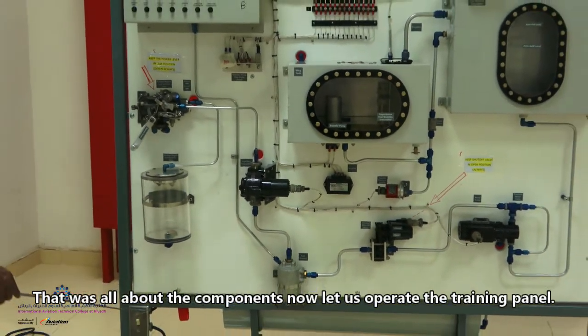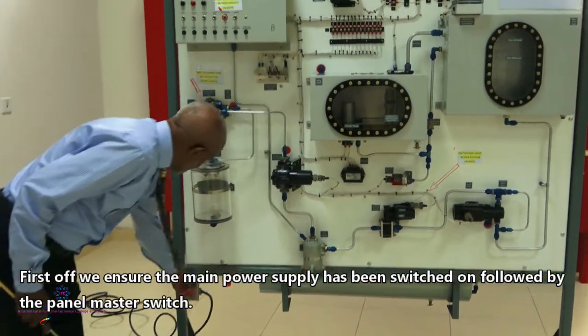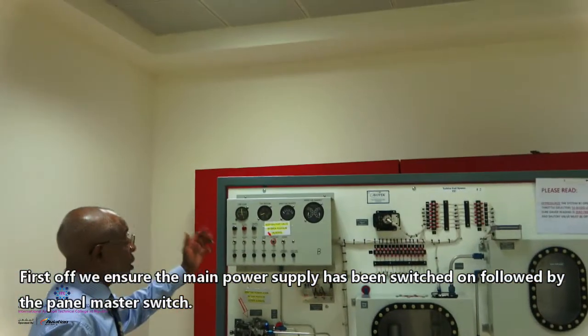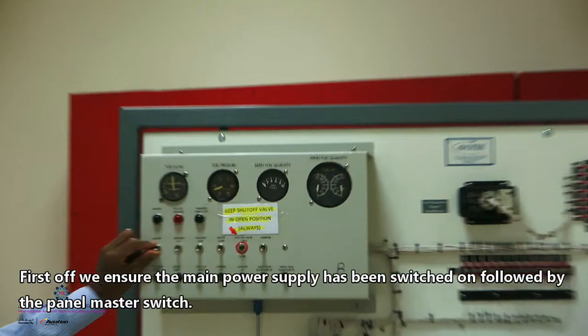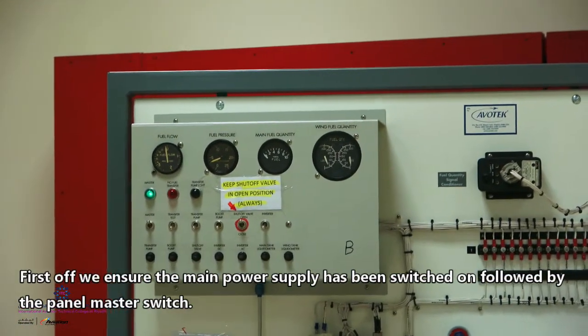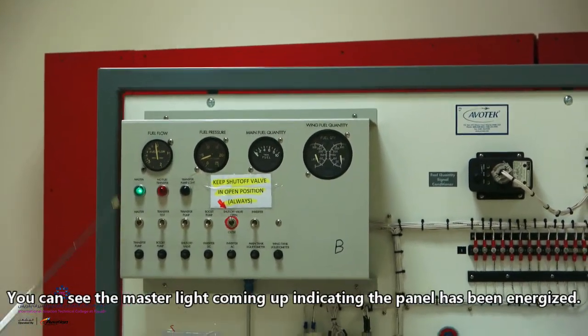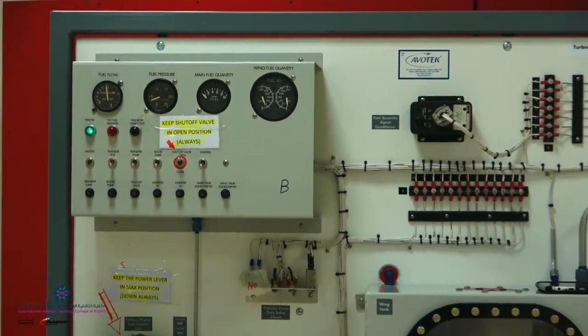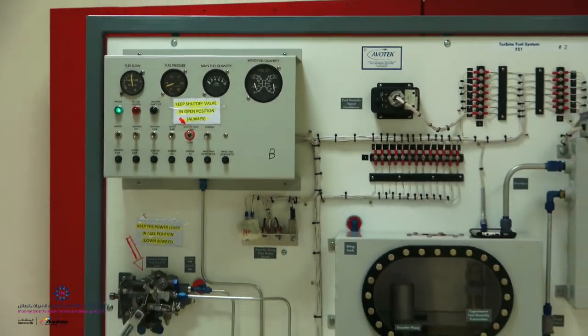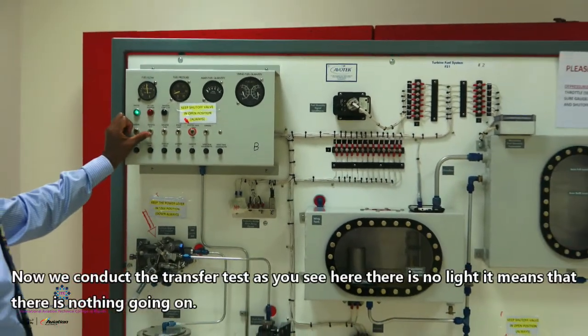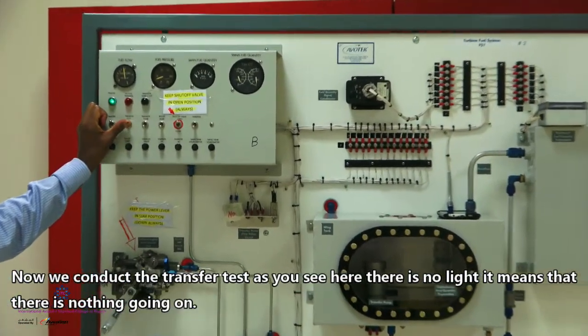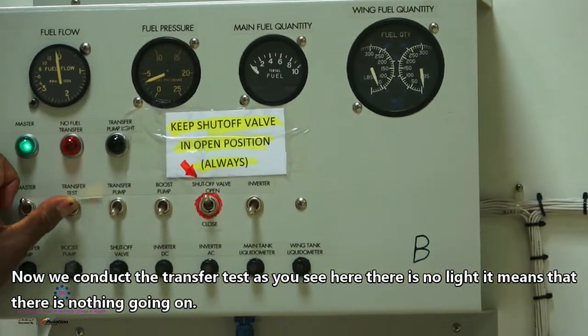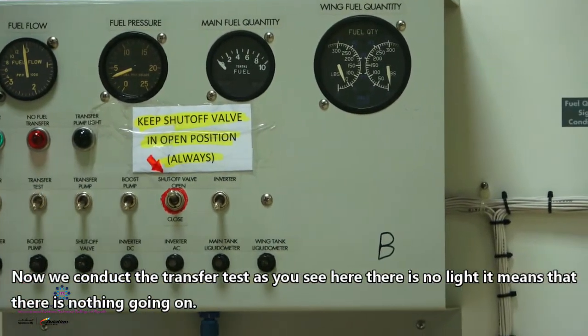So here what we do is we make sure our switch is on which is the main one for the whole panel and then we put the master switch on. As you see, we have a green light. It means now the control panel is energized. Energized means we check here the transfer test. As you see here, there is no light. It means there is nothing going on.